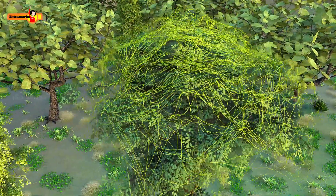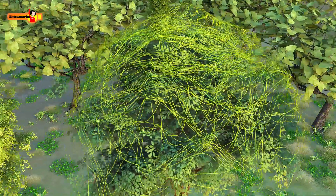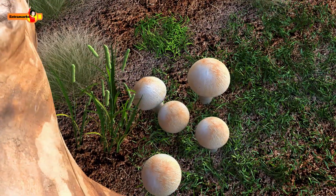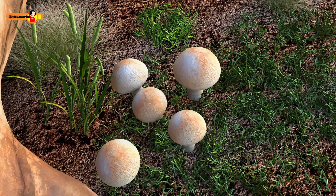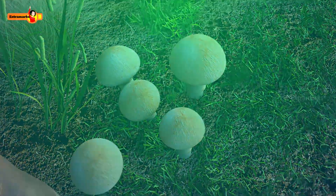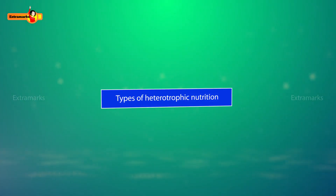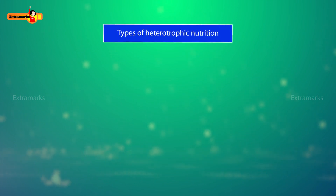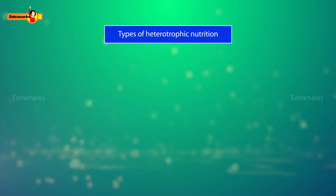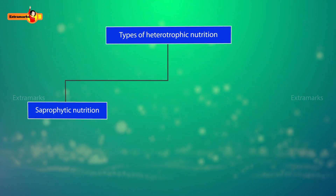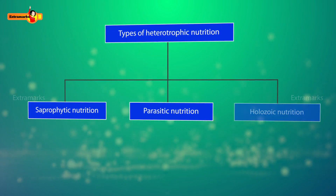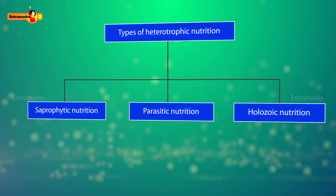The form of nutrition depends on the type and availability of food material and how it is obtained by an organism. Based on the ways in which organisms obtain their food, heterotrophic nutrition can be classified into three types: saprophytic nutrition, parasitic nutrition, and holozoic nutrition.